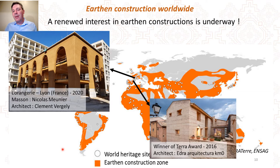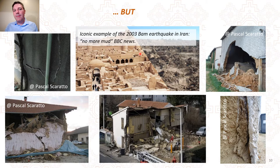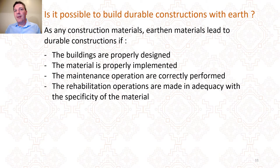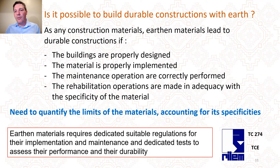However, when we think about earth construction, we sometimes think about pictures of disaster and collapse. The iconic example is the 2003 earthquake in Iran and the collapse of the citadel of Bam. So, when we look at this, we can wonder if it is possible to build durable construction with earth. The answer is yes, but earth should be properly used and properly implemented. The main problem is that it lacks suitable regulation for earth materials that takes into account the specificity of earth. It is one of the main goals of this TC to help fill in this gap.